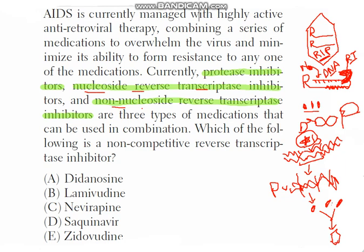So there are three types of enzymes: the reverse transcriptase enzyme, the integrase enzyme, and the protease enzyme. There are medications used in order to inhibit and stop all these enzymes. The protease inhibitors are medications which inhibit the protease enzyme.